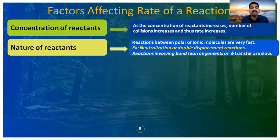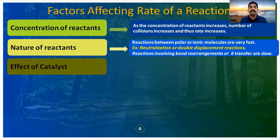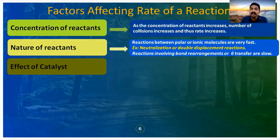Another factor affecting the rate of reaction is the catalyst. There are two types: positive catalyst and negative catalyst. In the case of a positive catalyst, the rate of reaction increases, whereas in the case of a negative catalyst, the rate of reaction decreases. Most of the catalysts we use are positive catalysts, meaning we use them to increase the rate of reaction.